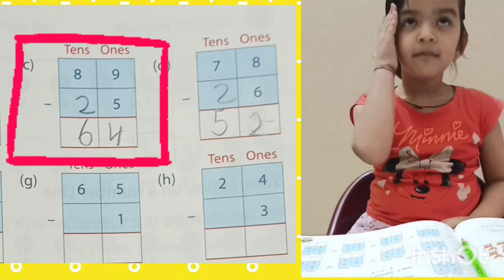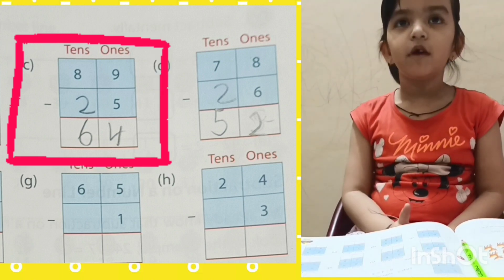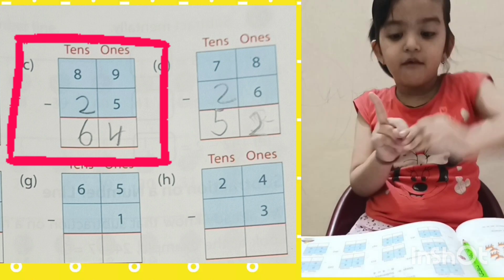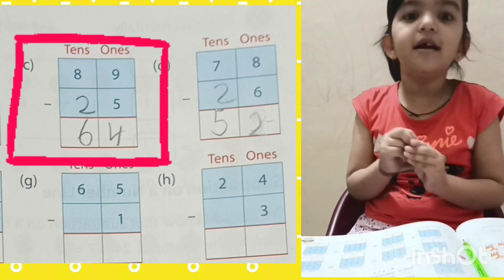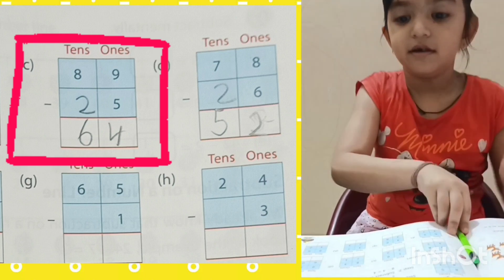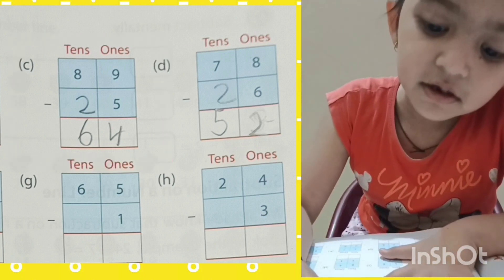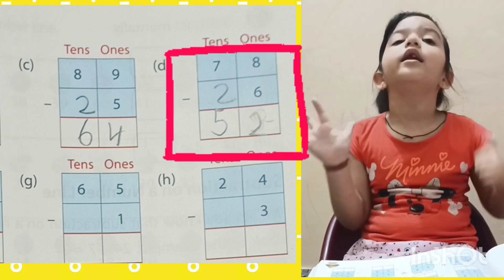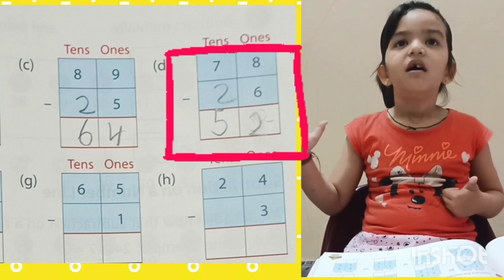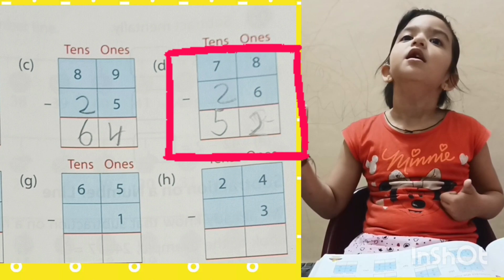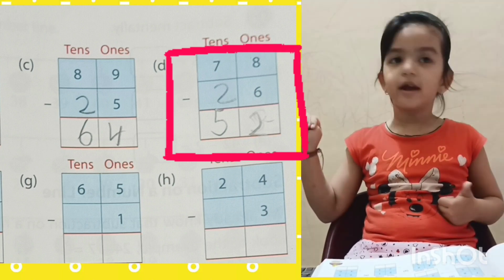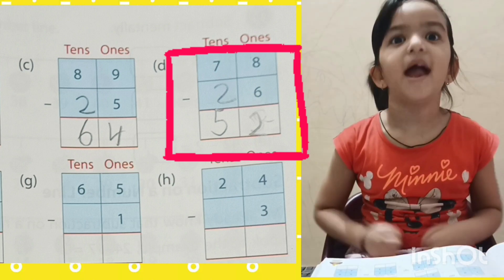Eight in my mind, two in my fingers, back counting two: seven, six. Six is my answer. Five, four, three, two. Two is my answer.